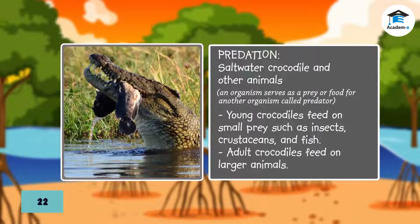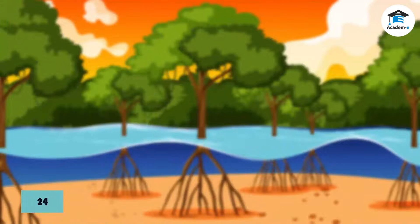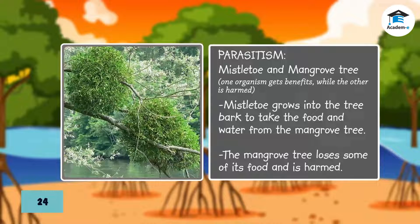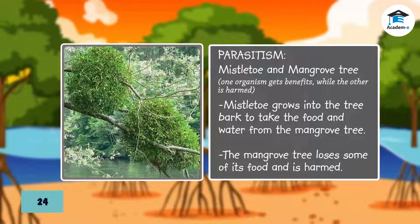Large predators in mangroves include estuarine and saltwater crocodiles. Young crocodiles feed on small prey such as insects, crustaceans, and fish, while adult crocodiles feed on larger animals. An example of parasitism is mistletoe growing on a mangrove tree. The mistletoe grows into the tree bark to take food and water from the mangrove tree, causing the mangrove tree to lose some of its food and be harmed.